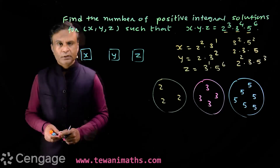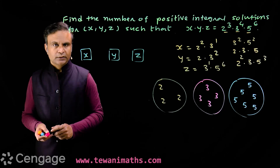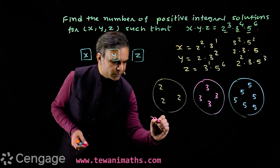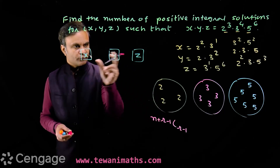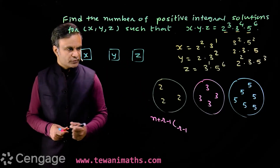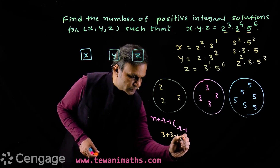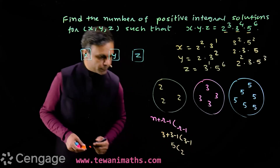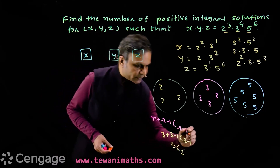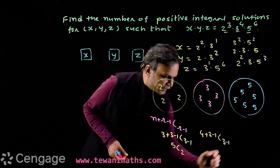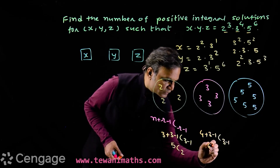Using the formula N + R − 1 C R − 1 for distributing identical objects into distinct boxes: for the three 2s, N = 3 and R = 3, giving 3 + 3 − 1 C 3 − 1 = 5C2. For the four 3s, N = 4 and R = 3, giving 4 + 3 − 1 C 3 − 1 = 6C2.